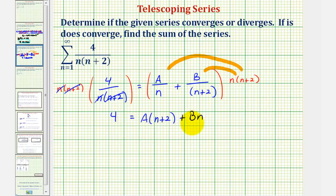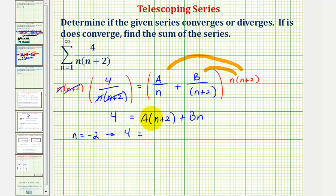And now to find the values of A and B, which will give us our partial fraction decomposition, we'll select convenient values of n. Notice if we let n equal negative two, we'd have a zero here. So if n equals negative two, this would give us the equation four equals A times zero plus B times negative two, so we have four equals negative two B. Dividing both sides by negative two, notice that B equals negative two.